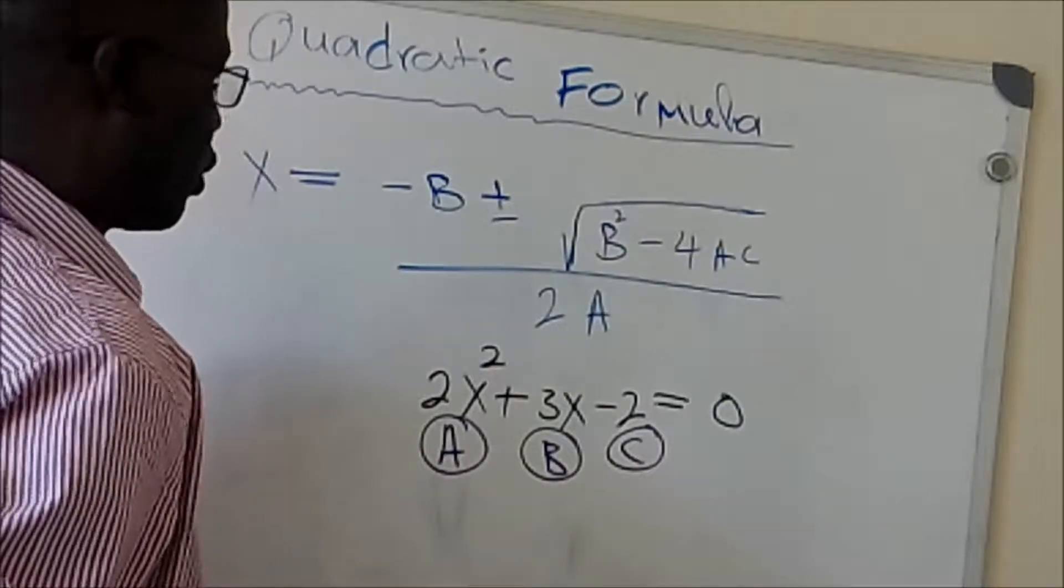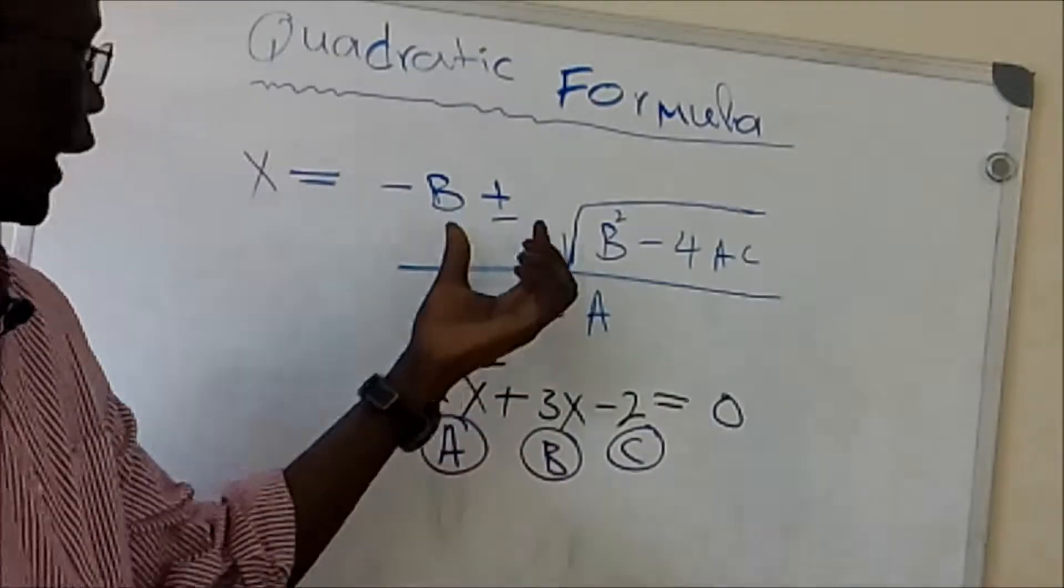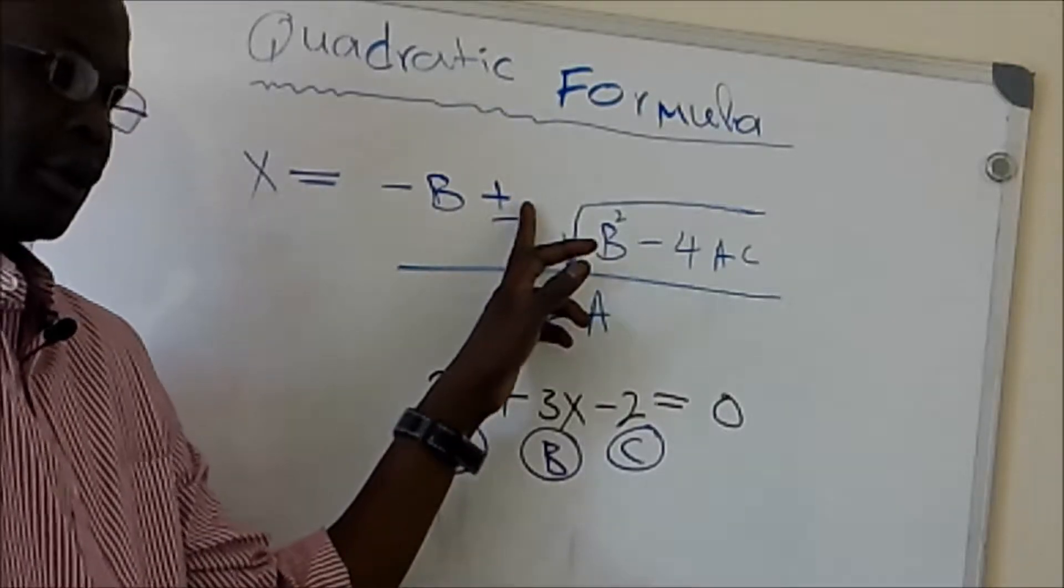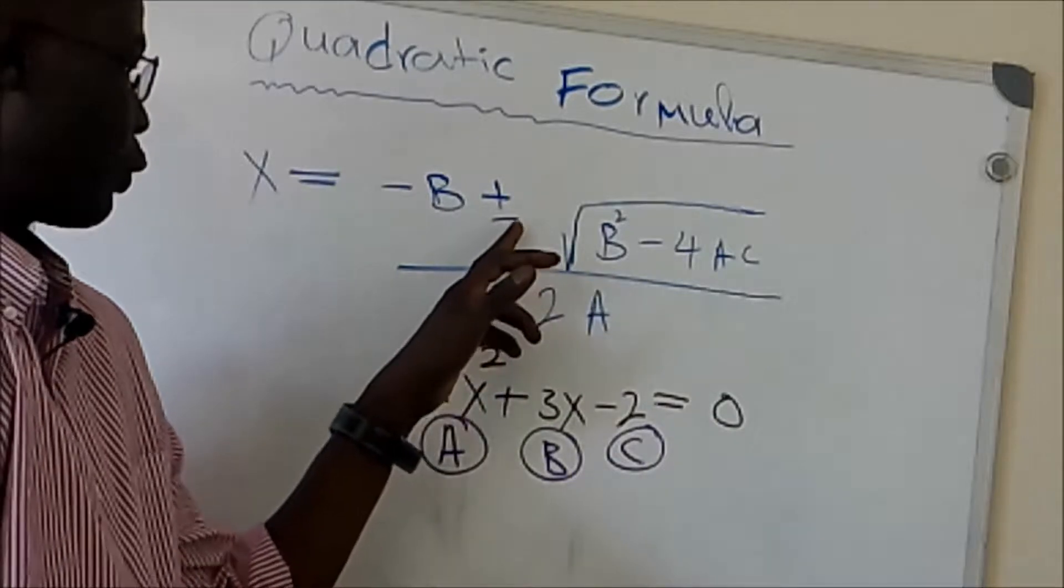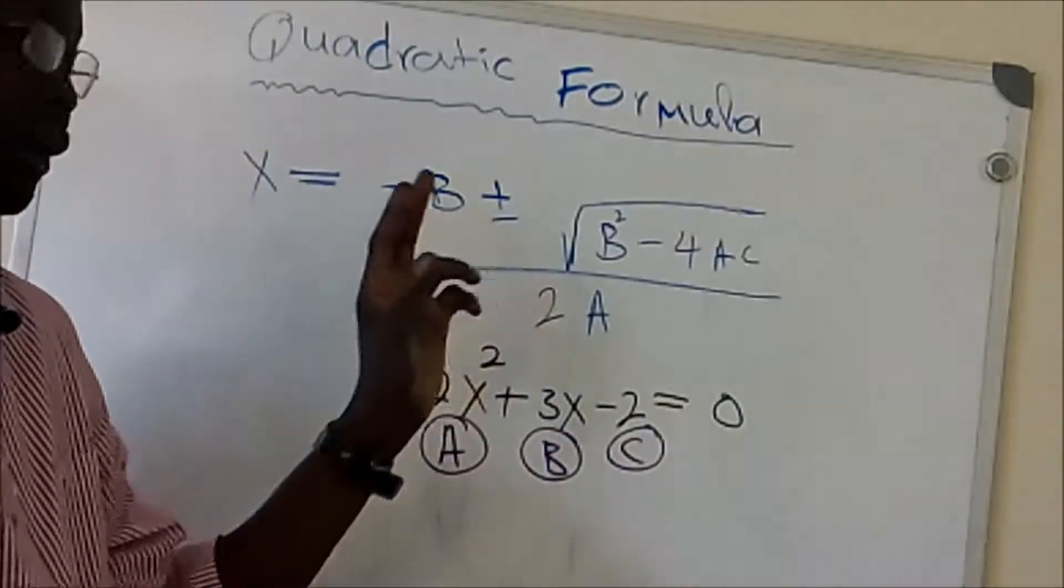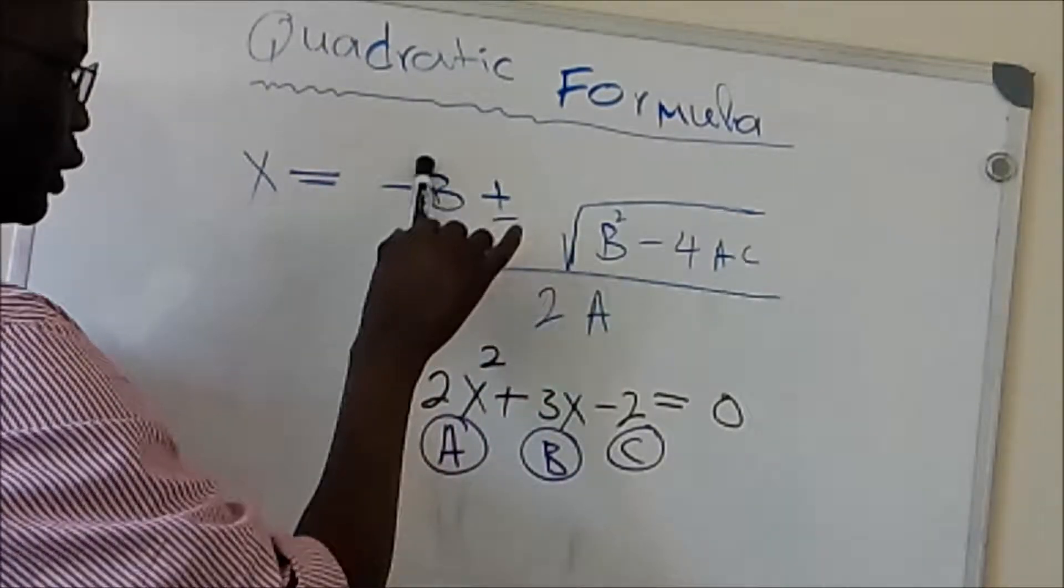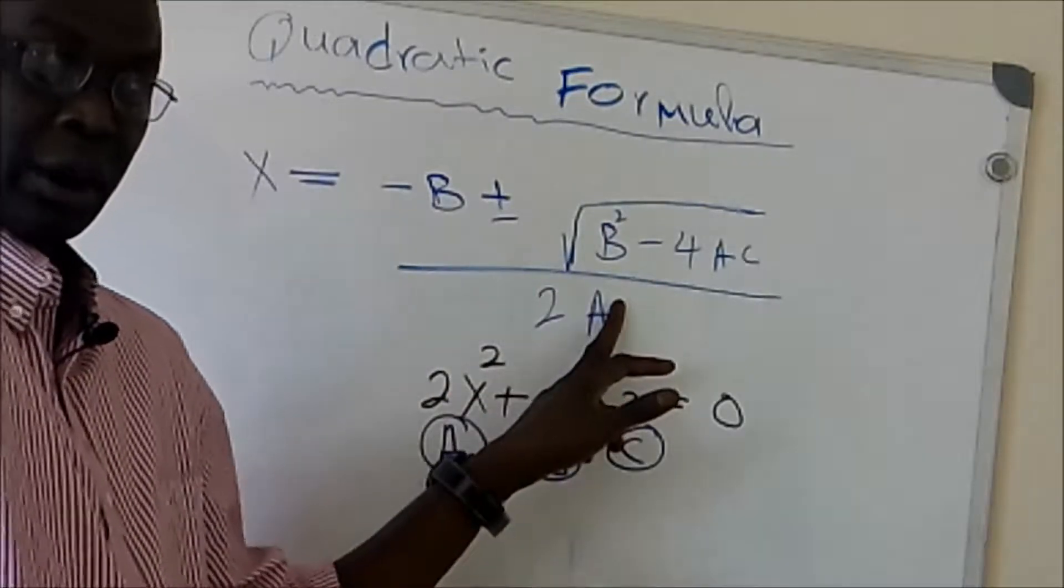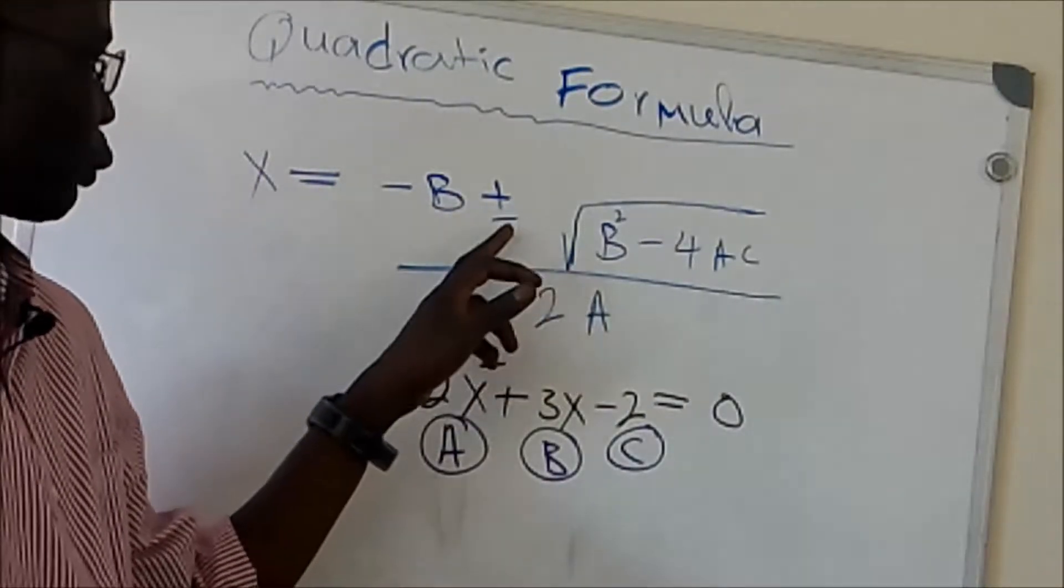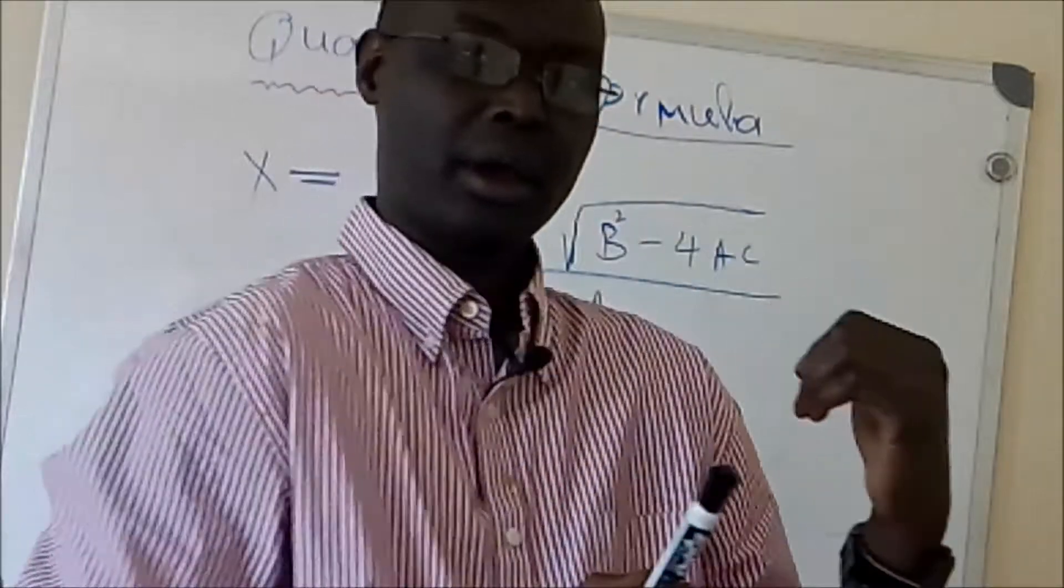What you want to keep in mind is you will have two answers for this question. First we're going to solve the problem using the plus sign, and the second step we're going to use the minus sign. At the end we should have two answers for this problem. You can also use the simplified method, but today we're using the quadratic formula.